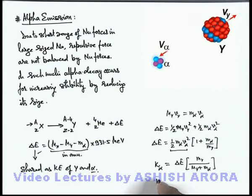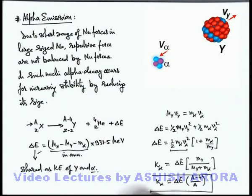In this situation, if A is the mass number of parent nucleus X, then this kinetic energy of alpha particle can also be written as delta E multiplied by A minus 4 by A. This is the value of kinetic energy of alpha particle which we can directly calculate if we know the Q value of an alpha decay reaction.